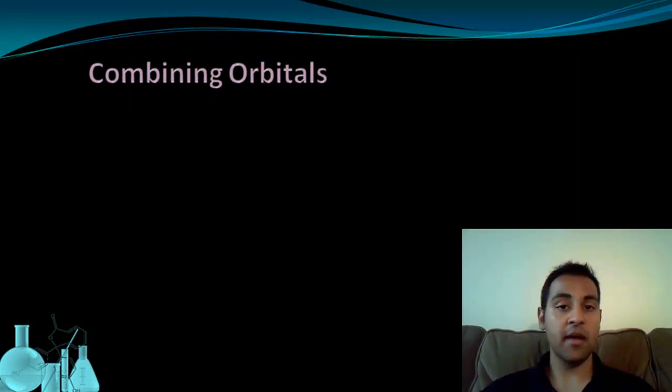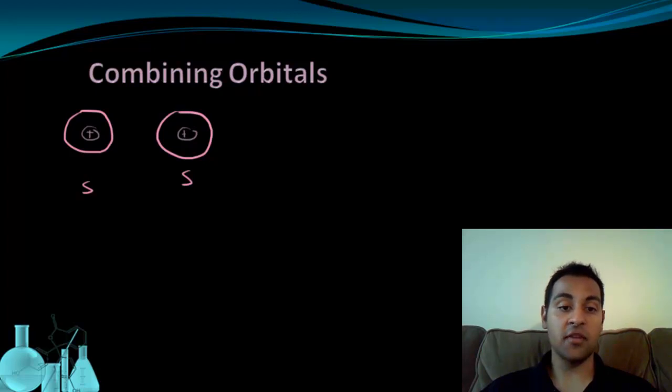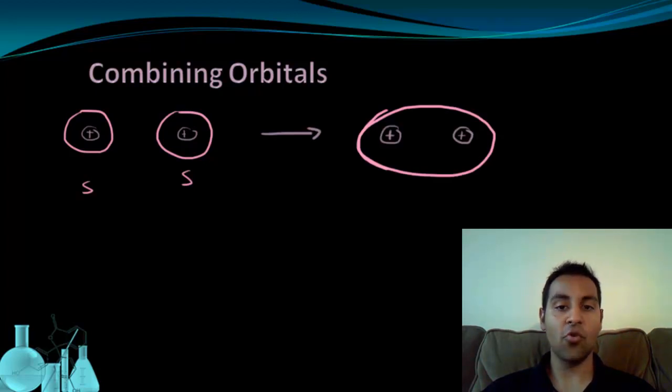So the first way that orbitals can combine is when they are lined up with each other end to end. Let's look at a couple of examples of that. Here we have two nuclei from two different atoms, and we're going to look at what happens when each one has an s orbital that it's using for bonding. So these are two s's. When a bond is formed between the s orbital of one and the s orbital of another, there's going to be overlap in the area between the nuclei, and it ends up looking like this.